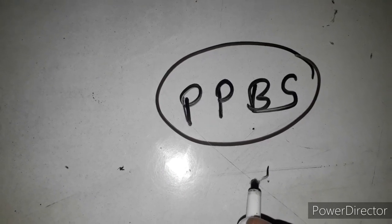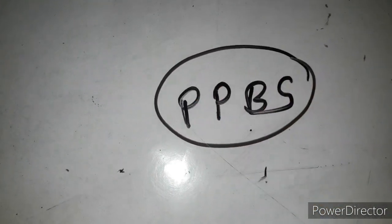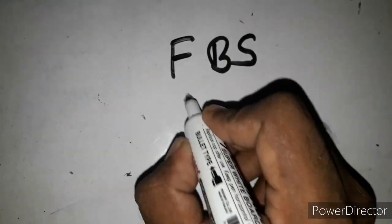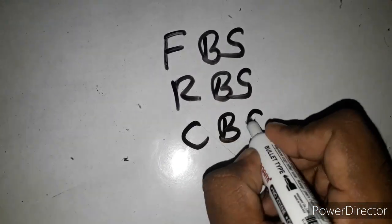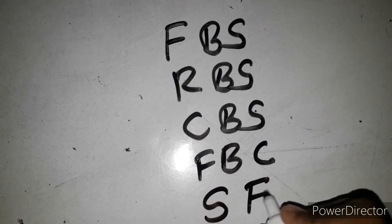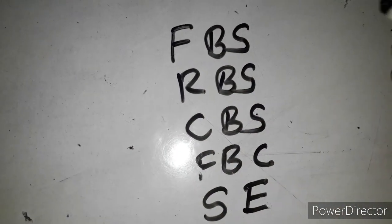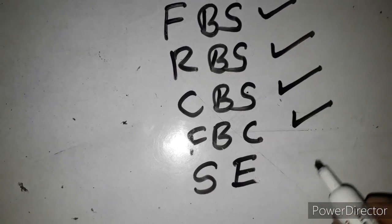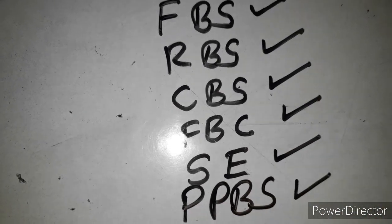This is a Serum Electrolyte. FBC and SC — this is the investigation. This is Fasting Blood Sugar, Random Blood Sugar, Capillary Blood Sugar, Full Blood Count, Serum Electrolyte, PPBS, and Post-Prandial Blood Sugar.